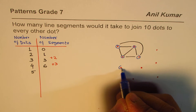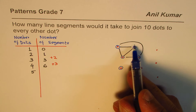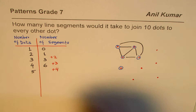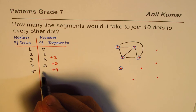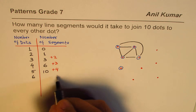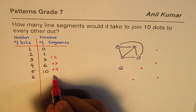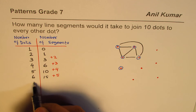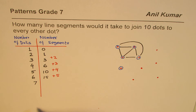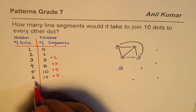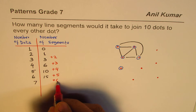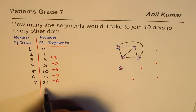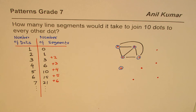Likewise, if I keep adding dots, the fifth one will need four more connections. Adding four to six gives us ten. For six dots, I add five: ten plus five is fifteen. For seven, I add six: fifteen plus six gives us twenty-one. I can continue this pattern in the table.